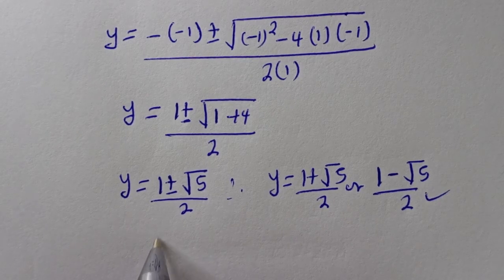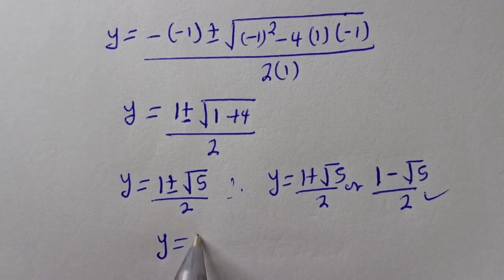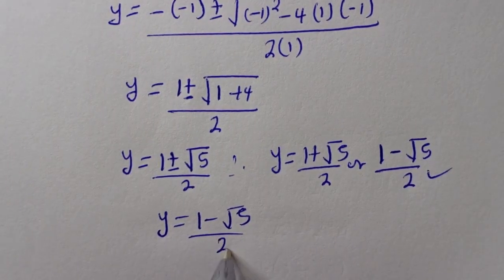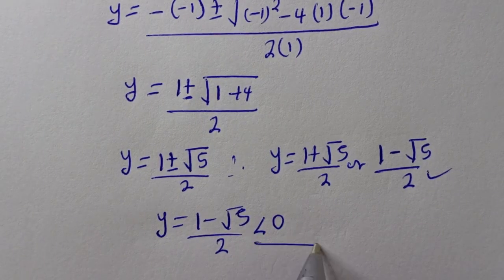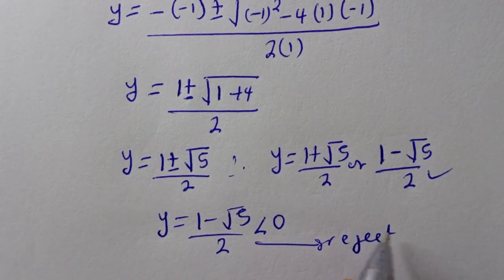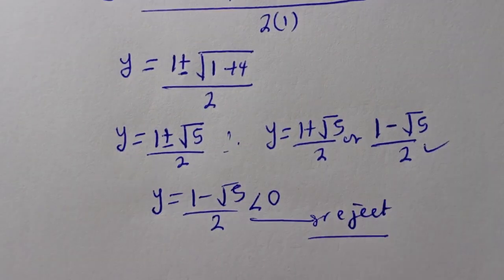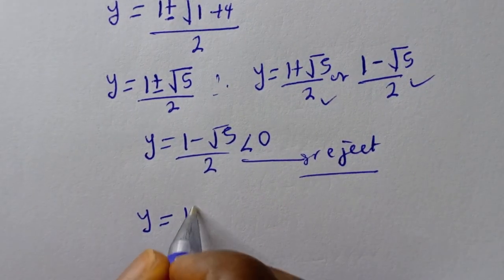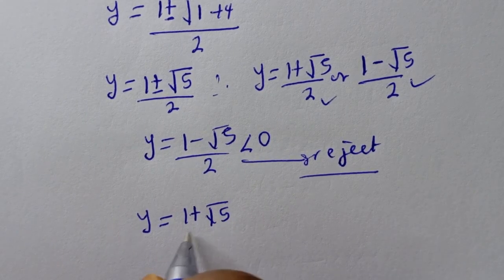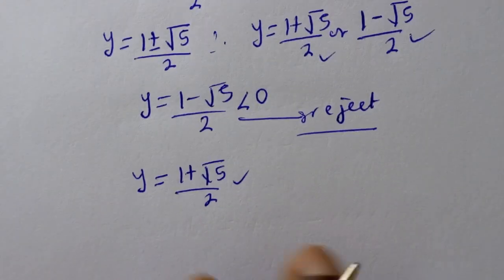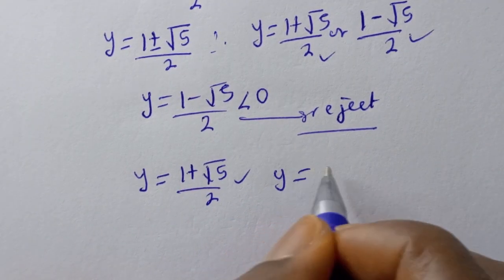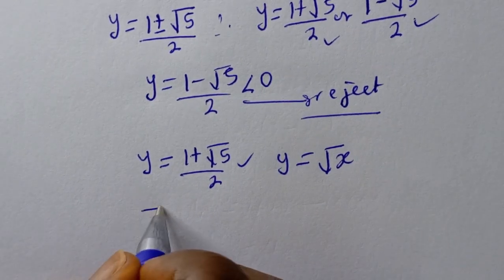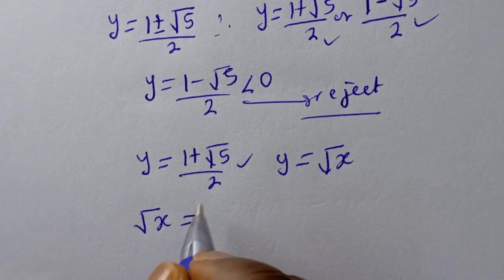From the two solutions: y equals 1 minus square root of 5 over 2 is less than zero, so this is rejected. The only valid solution is y equals 1 plus square root of 5 over 2.